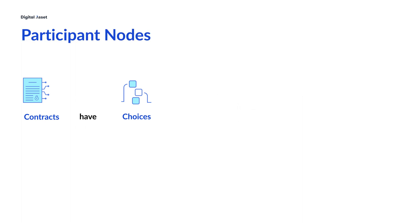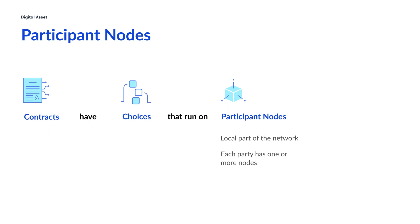The contracts are stored and the choices are run on a participant node. Participant nodes are the local part of the network for your business. You might have several participant nodes, but generally a party in a multi-party application will have their own participant node that they maintain and manage as part of the broader multi-party application. This is how a business can ensure the physical location and custody of their data.